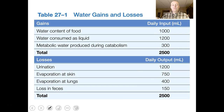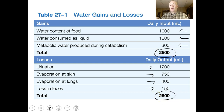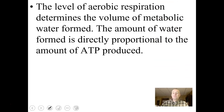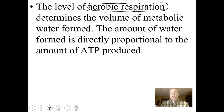Remember that the input daily includes food, which has lots of water in it, water we consume, and metabolic water. We urinate, expire water through our lungs, evaporate water through our skin, and lose water through feces. Your level of aerobic respiration determines the volume of metabolic water — the amount of water formed is directly proportional to the amount of ATP produced. More ATP means more water made; less ATP means less water.